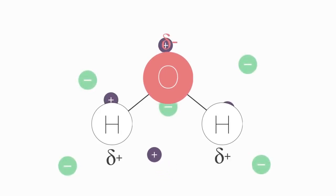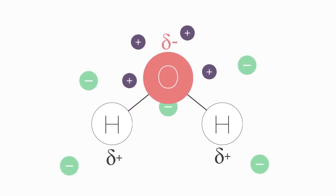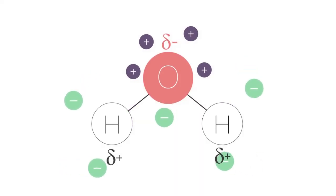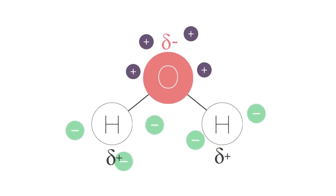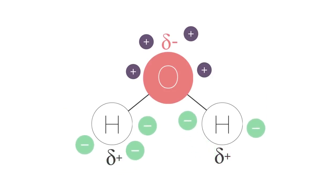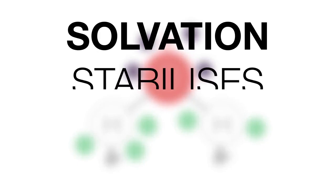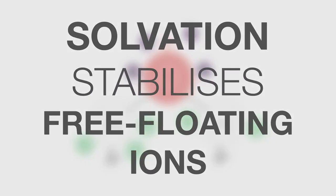As you can see, the sodium ions are stabilized by the negative dipole of water, and the chloride ions are stabilized by the positive dipoles of water. This solvation stabilizes the free-floating ions.